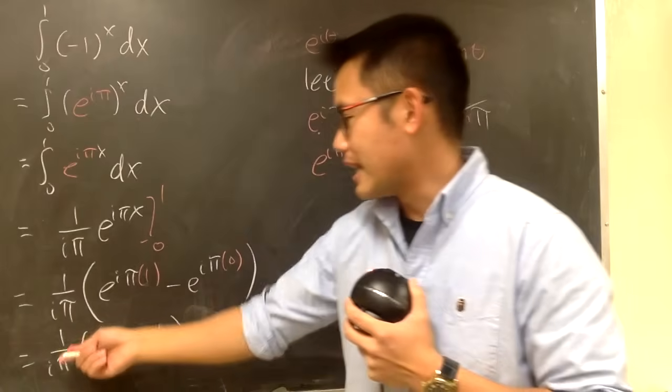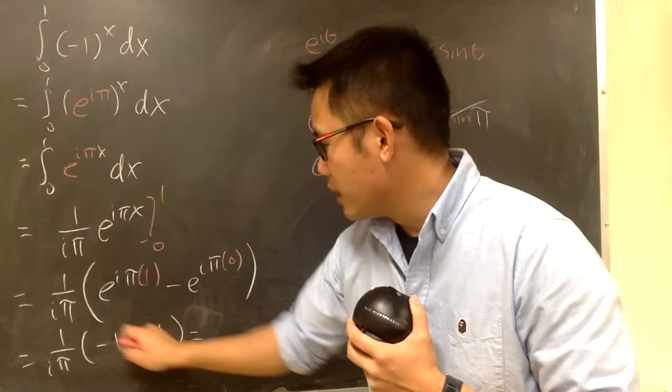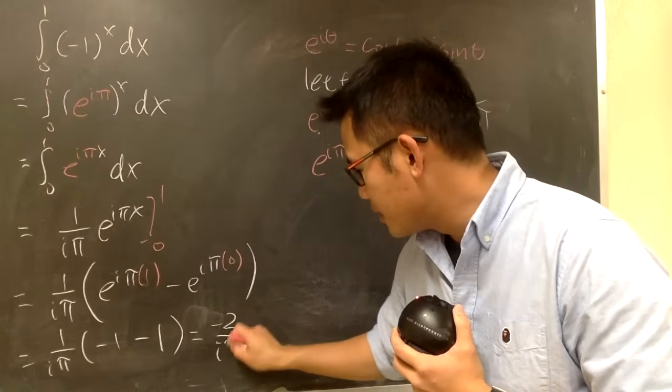Minus 1 minus 1 is minus 2, times that is minus 2 over that. So, you know this is equal to negative 2 over i pi, like this.